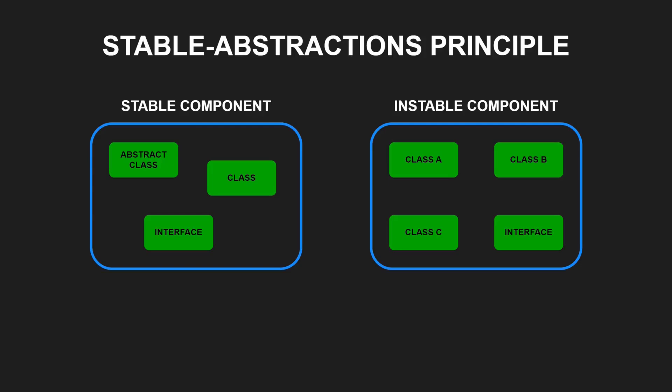We can measure the abstractness of a component by counting the total number of classes in the component, Nc, and the number of abstract classes and interfaces in the component, Na. The abstractness metric A is then computed by dividing Na by Nc. This metric ranges from 0 to 1. A value of 0 means this component contains no abstract classes, and a value of 1 means this component contains only abstract classes or interfaces.